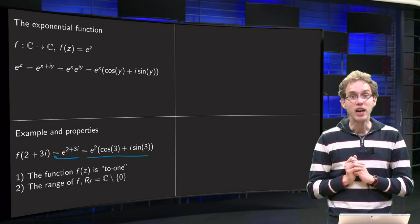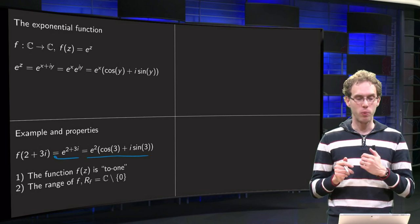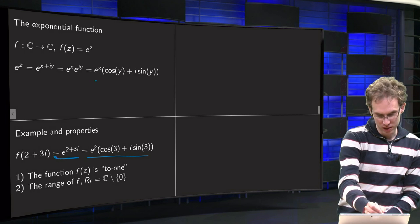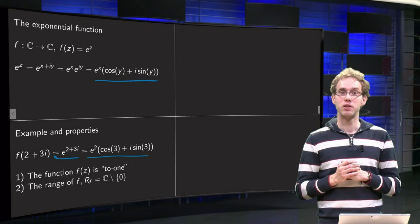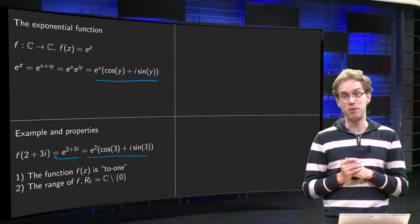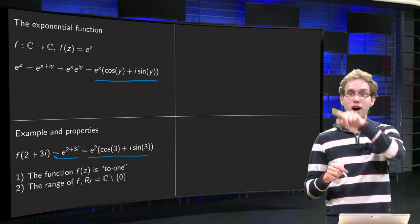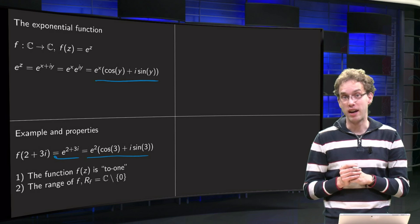And then the range of f, where can we get? The f of z equals e to the power x times cosine y plus i times sine y, so you can get any argument if you vary y.